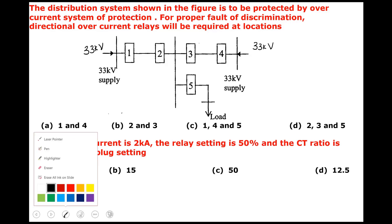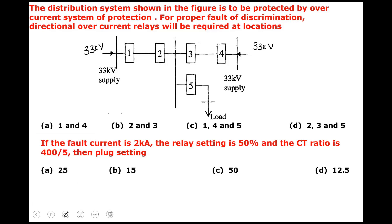To decide which relays need to be directional, first identify the zone of relay 1 and 2. This is the zone of relay 1 and 2. You exactly simulate the fault in the middle of the zone, and see how the fault currents will flow. Before that, you have to determine the normal current directions.